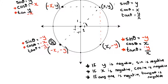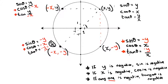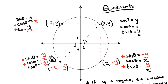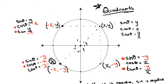This is the principle on which quadrants work. Quadrant one is top-right, quadrant two is top-left, quadrant three is bottom-left, and quadrant four is bottom-right. In quadrant one, both x and y are positive so all functions are positive. In quadrant two, x is negative and y is positive, so only sine is positive. In quadrant three, both are negative so only tangent is positive.